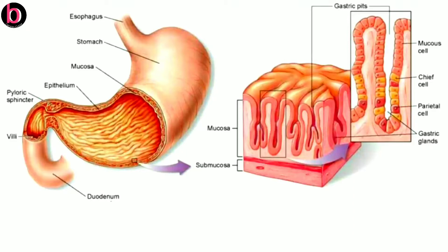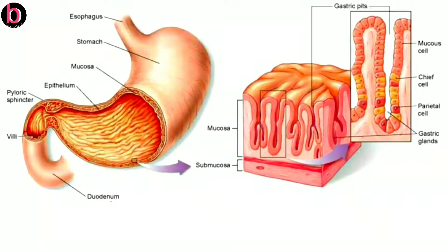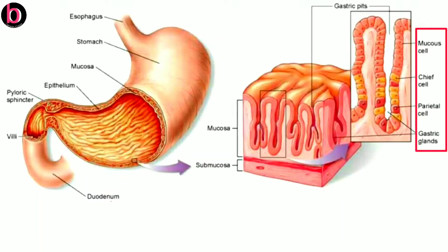There are a huge number of folds inside the stomach. These folds are known as rugae, and they form the innermost layer of the stomach. The rugae further carry a number of pits known as gastric pits. In these gastric pits you can see different types of cells: mucus cells, chief cells, parietal cells, and gastric cells, all responsible for a number of secretions.